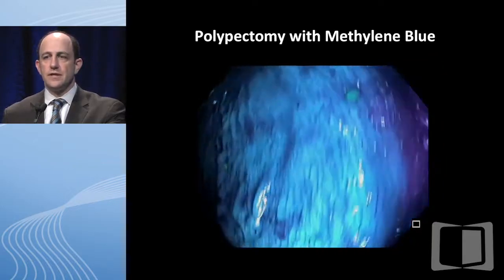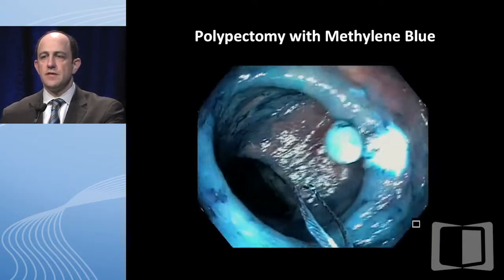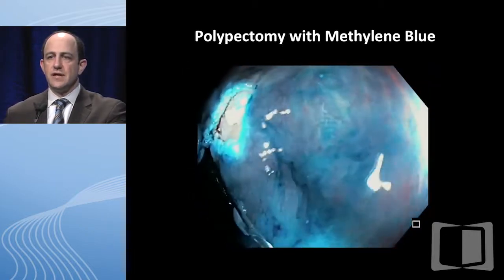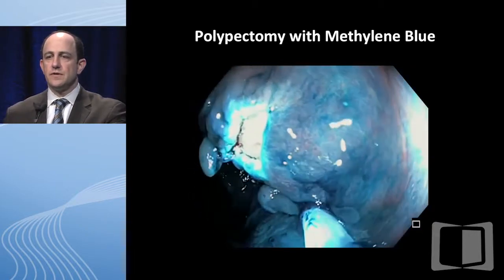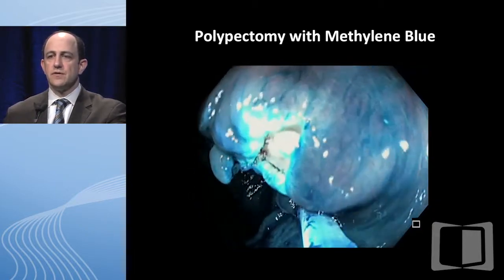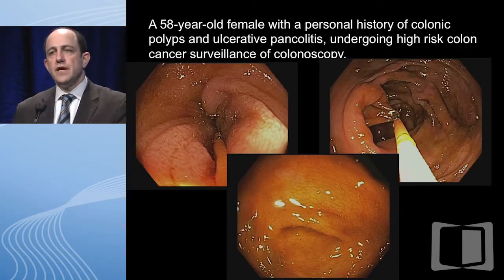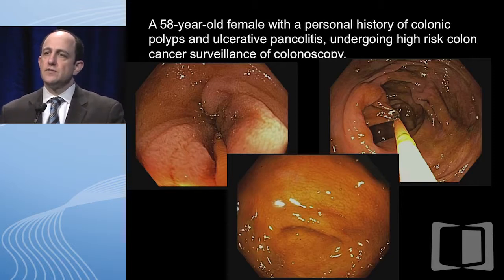In the same patient at follow-up there were two lesions identified after cleaning everything up. Here's me removing the second lesion with a snare cautery. A 58 year old female with a personal history of colonic polyps and ulcerative pancolitis underwent high-risk colon cancer surveillance colonoscopy.